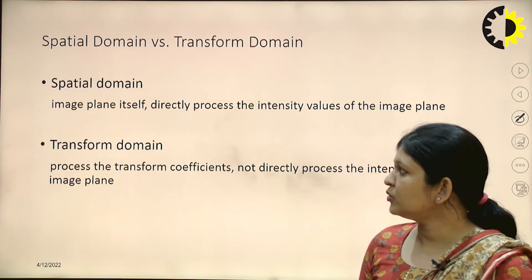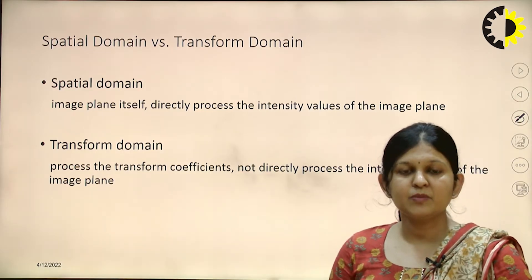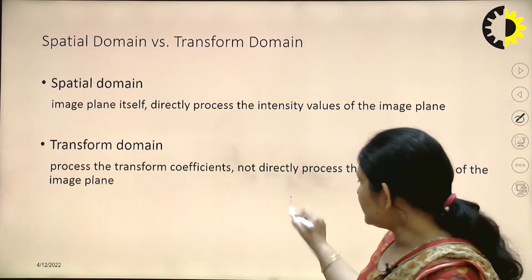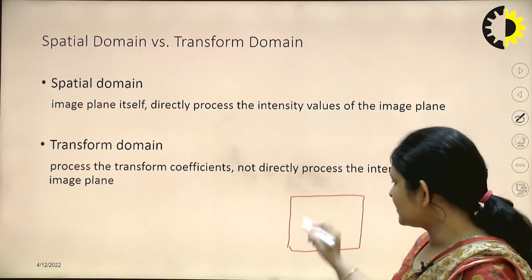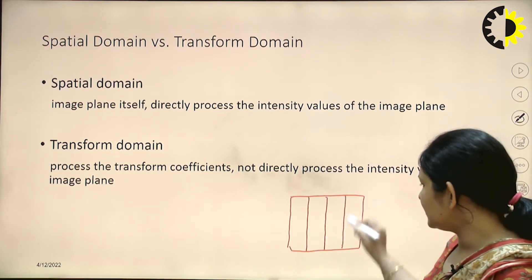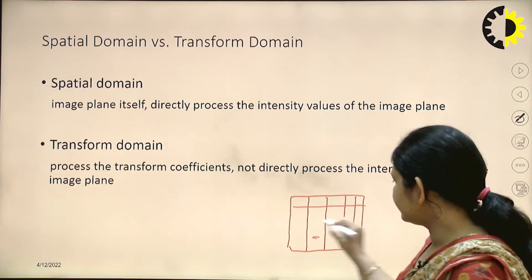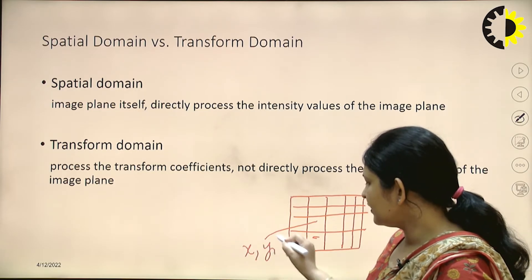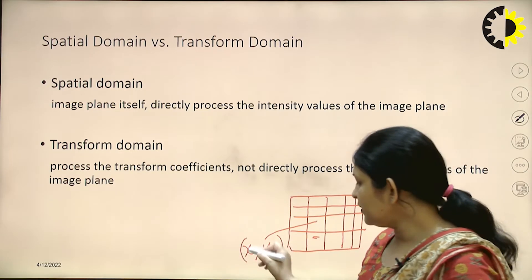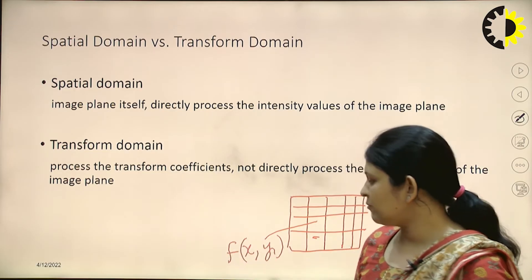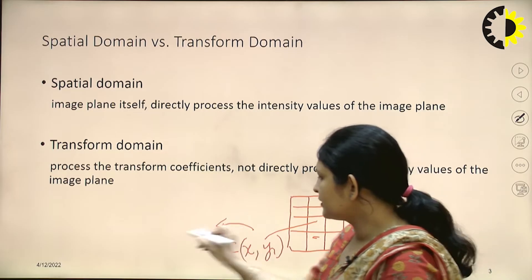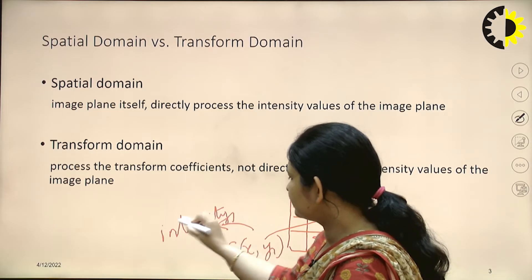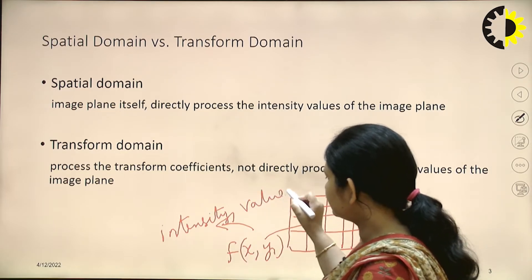Let's see what is the spatial domain. The spatial domain is the image domain — we use images as they are. The image is divided into pixels, and each pixel has a coordinate x, y. At each coordinate we store a value f(x, y), which is the intensity value of the pixel.